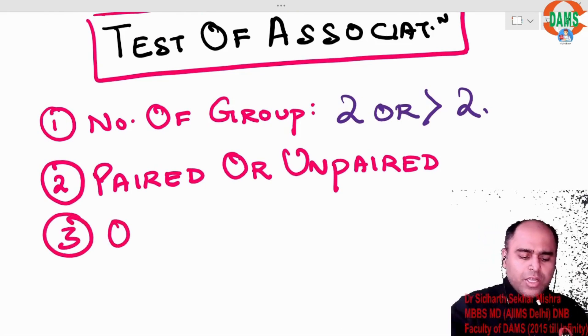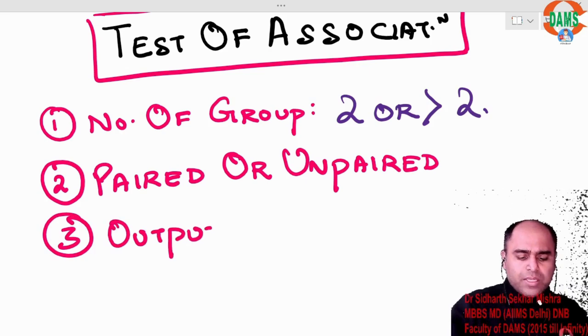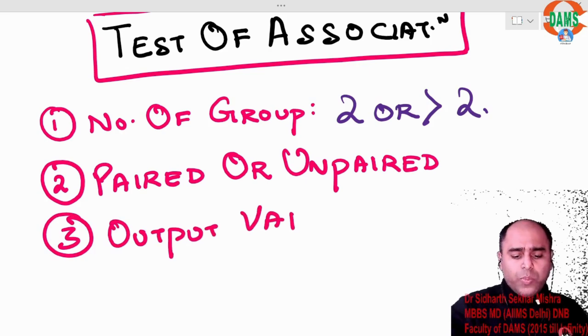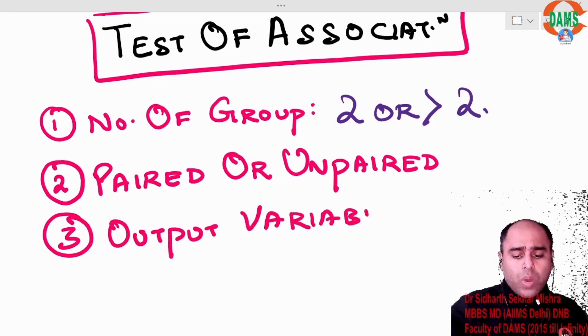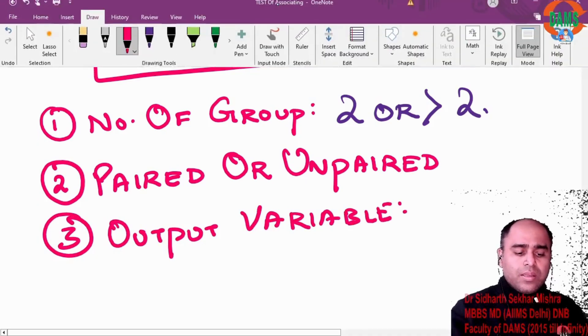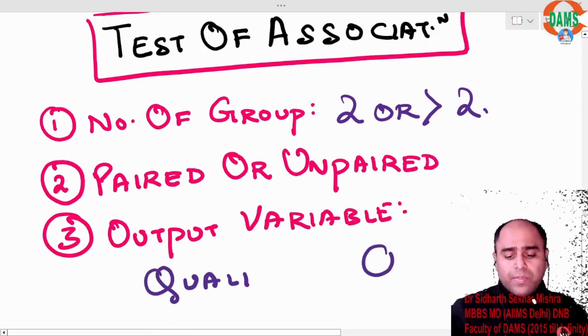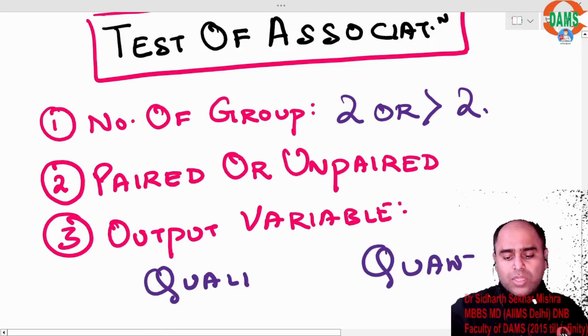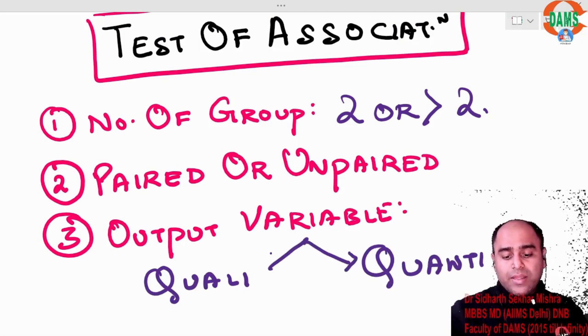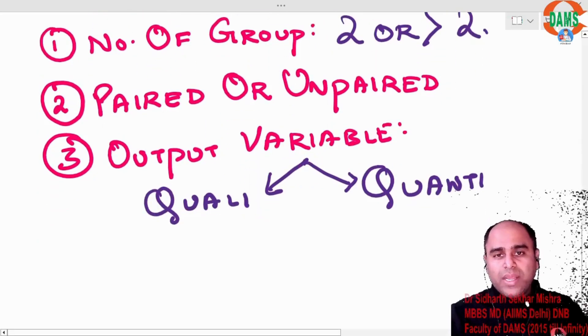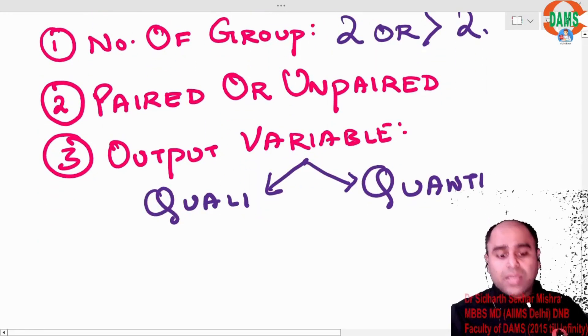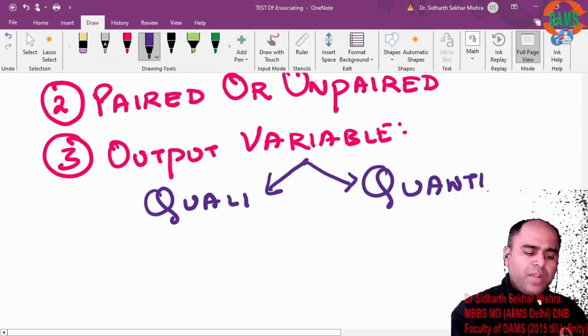Third, you have to see what the output variable is. If the output variable is quali or it can be quanti. What is quali? How is it? Kaisa hai wo? Quanti - How much? Ya kitna? So the moment we do this.